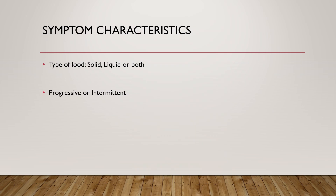Dysphagia can be only to solids, only to liquids, or to both solids and liquids. It can also be progressive or intermittent. When it is to both solids and liquids, it suggests a motility disorder. When it is only to solids, it indicates narrowing of the lumen — usually when the esophageal lumen is less than or equal to 13 mm, the patient feels dysphagia to solids.